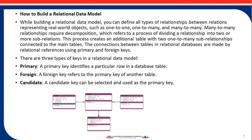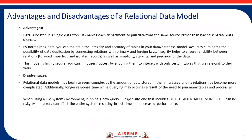This process creates an additional table with two one-to-many sub-relations connected to the main tables. The connection between tables in relational data models is made using primary and foreign keys. These are some advantages of relational data model: data is located within a single data store. This enables each department to pull data from the same source rather than having separate data sources. By normalizing data, you can maintain integrity and accuracy of tables in your database model. If the model is highly secure, you can limit users' access by enabling them to interact with only certain tables relevant to their work.